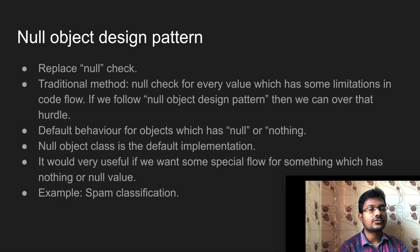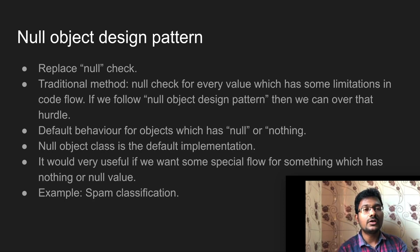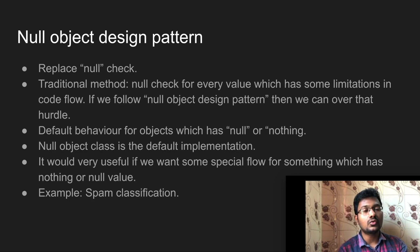Traditionally, if you are a programmer, you would use null checks for everything. For example, if you are writing a program to add two numbers — a plus b — you would first check whether a is not equal to null and b is not equal to null. Only then would you proceed to add the two numbers. These are called null checks — the traditional method.